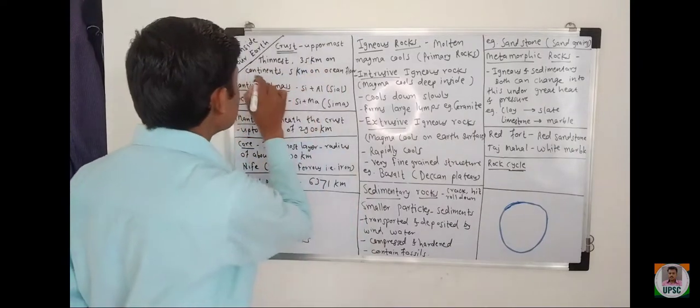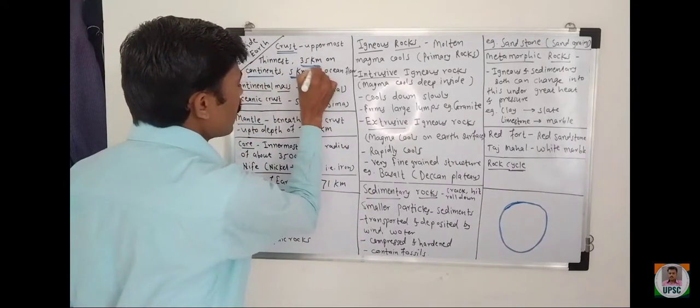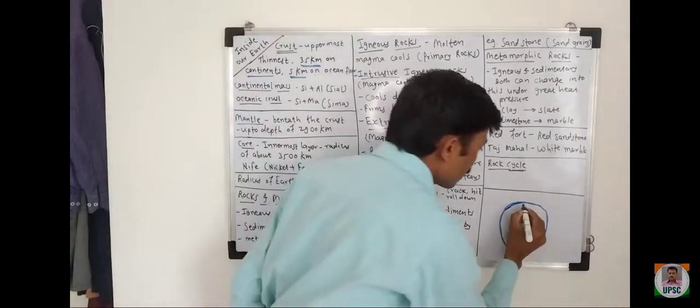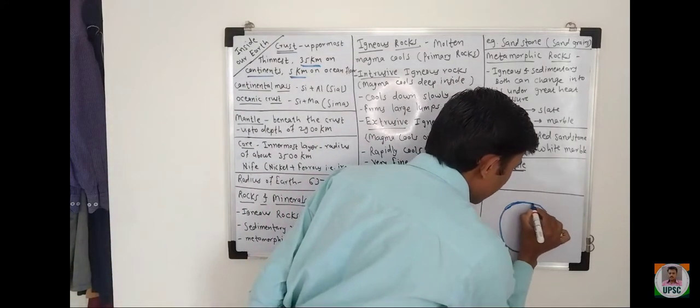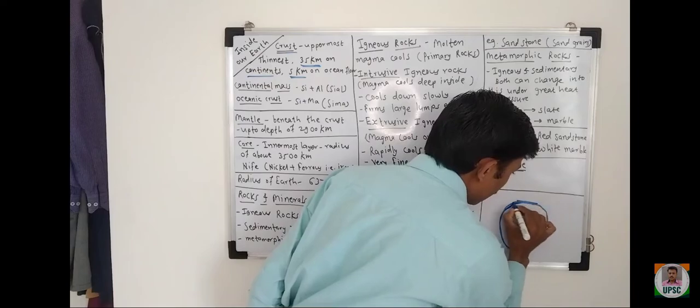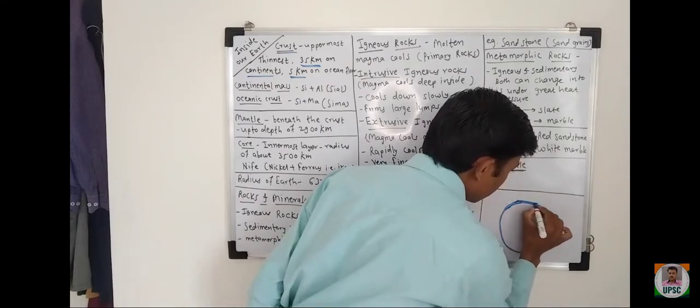It is how much? 35 km on the continents and 5 km. See, on the continents, it is 35 km. Suppose this is the continent, it is 35 km. This distance is 35 km.